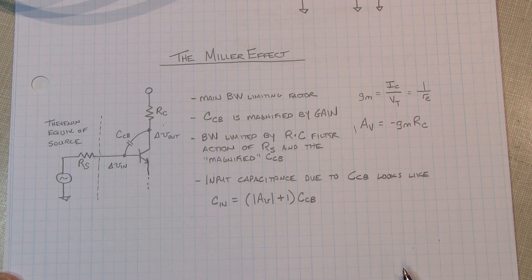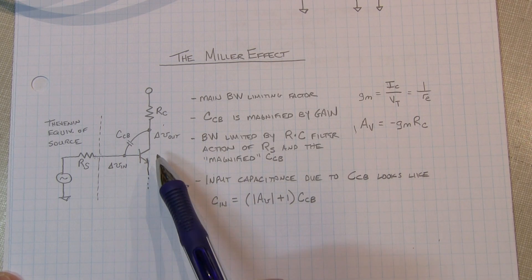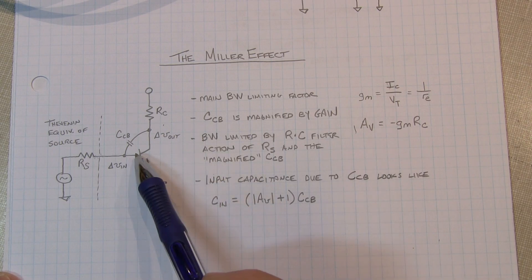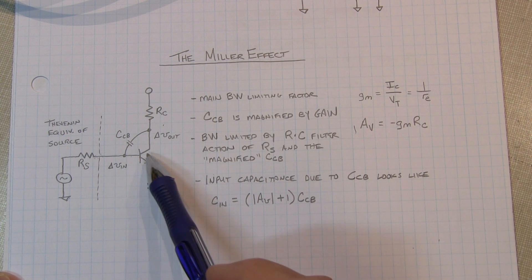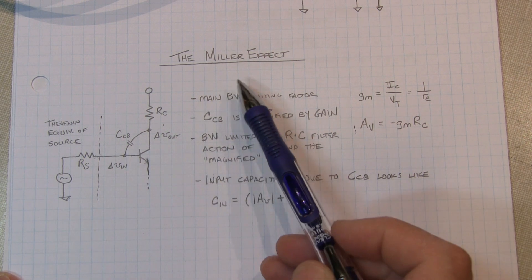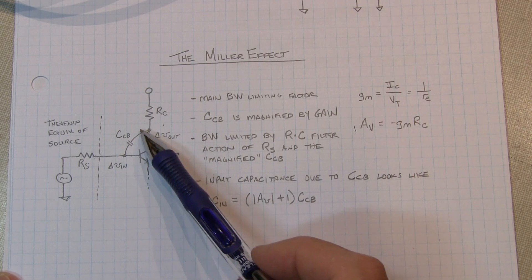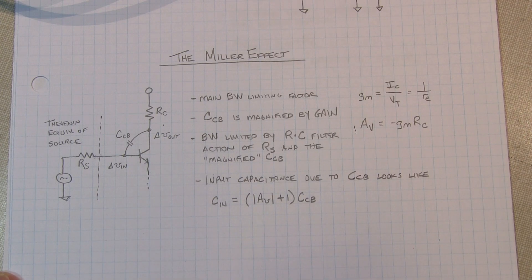The Miller effect is often the main bandwidth limiting factor in a common emitter amplifier design. And the reason for that is because of the magnification of the effect of parasitic capacitance. Any transistor will have capacitance between its various nodes: collector to emitter, base to emitter, and collector to base. Now each of these capacitances can essentially steal current away from the transistor and therefore affect the bandwidth and performance of the transistor. Now the Miller effect is particularly bad because it magnifies the effect of the collector base capacitance.